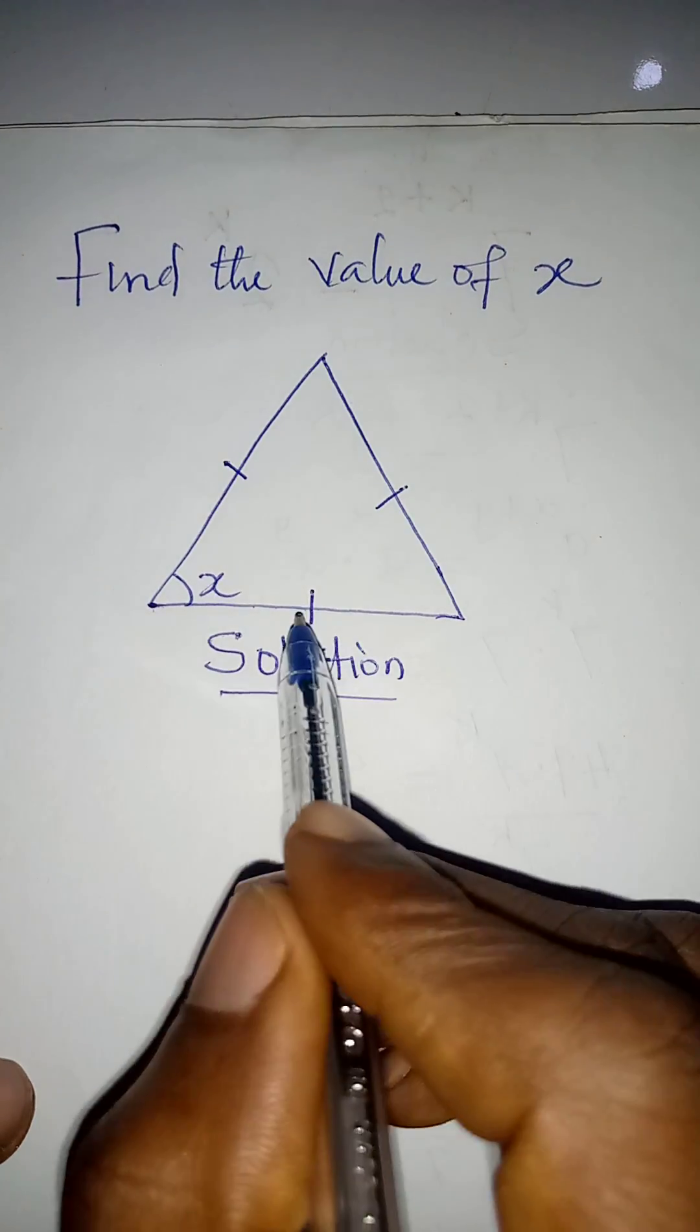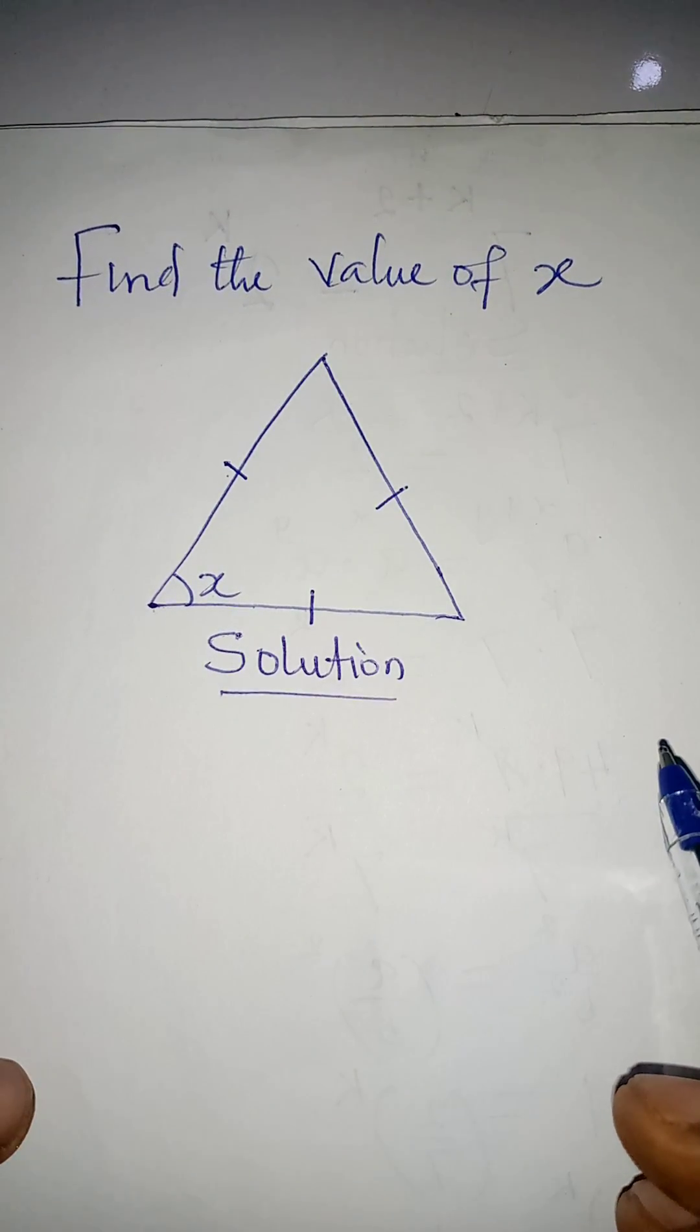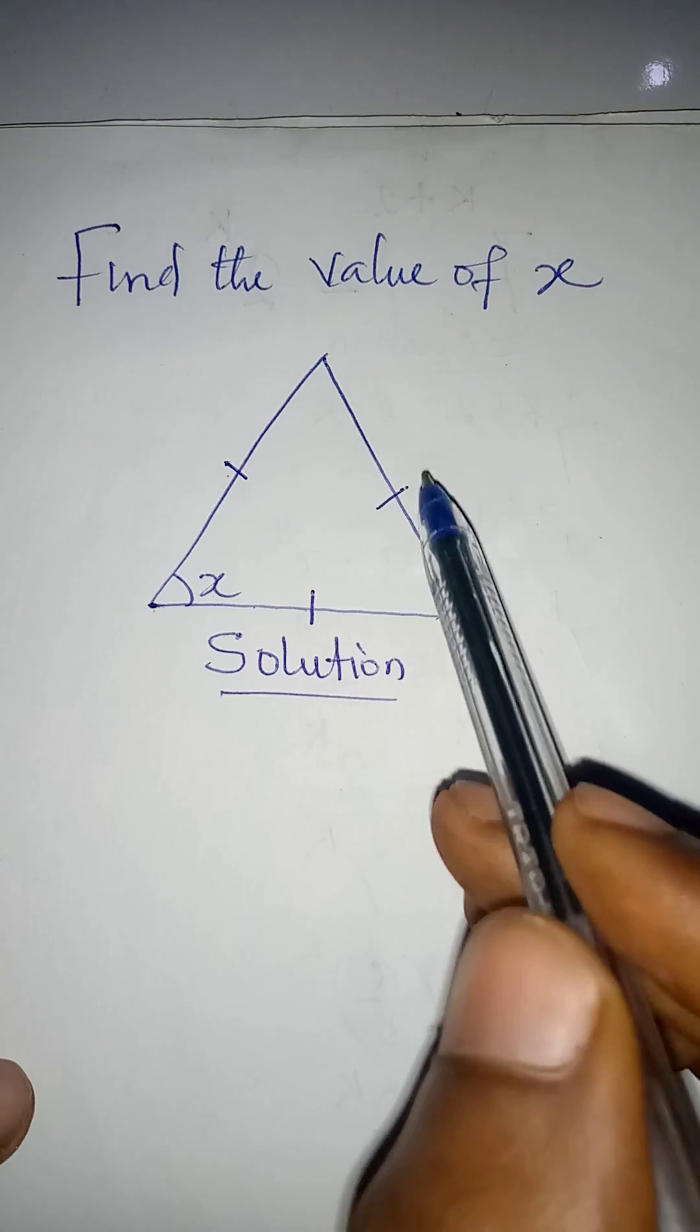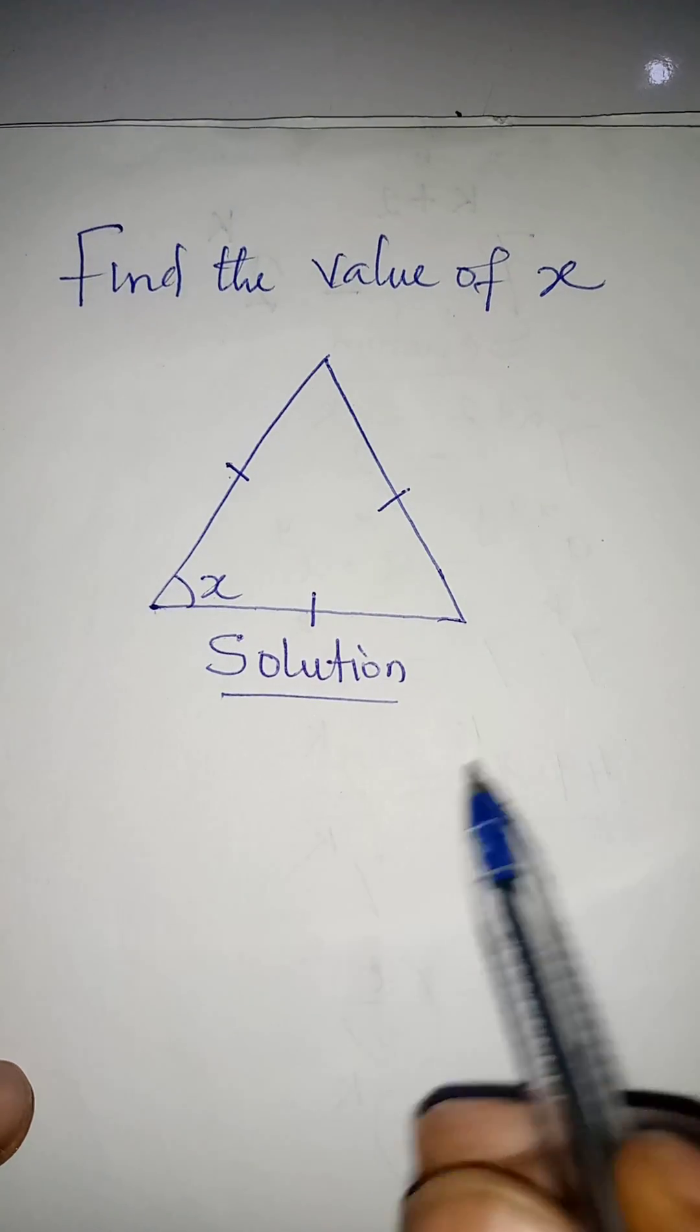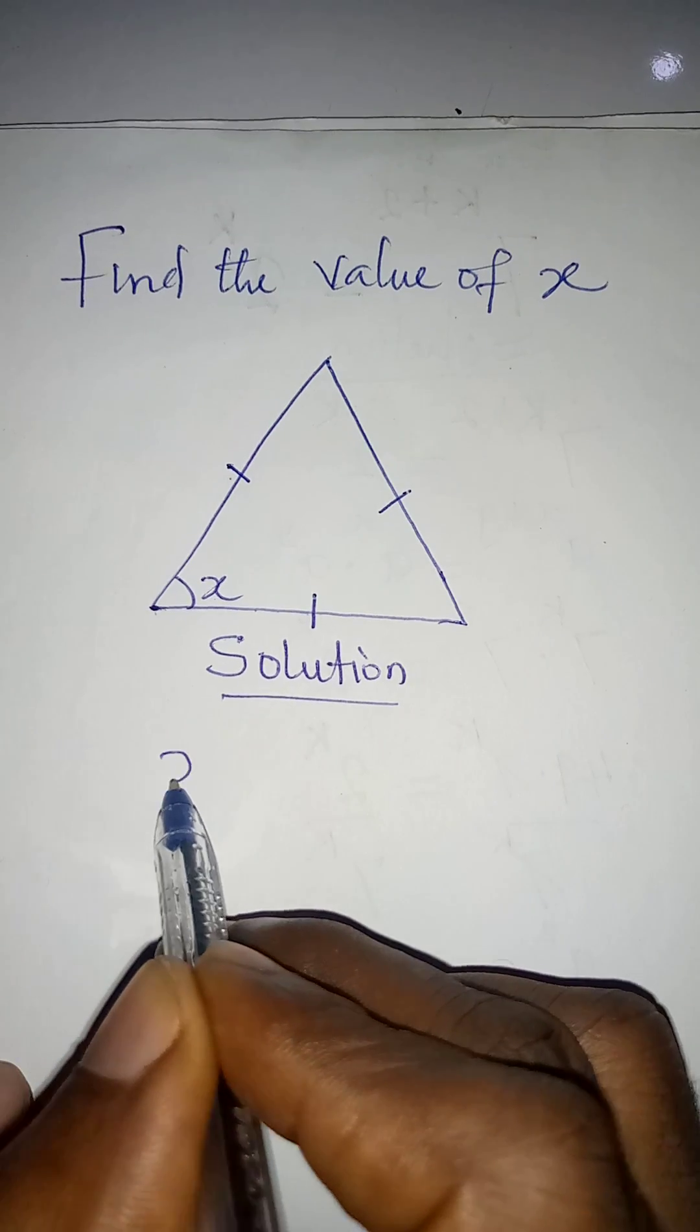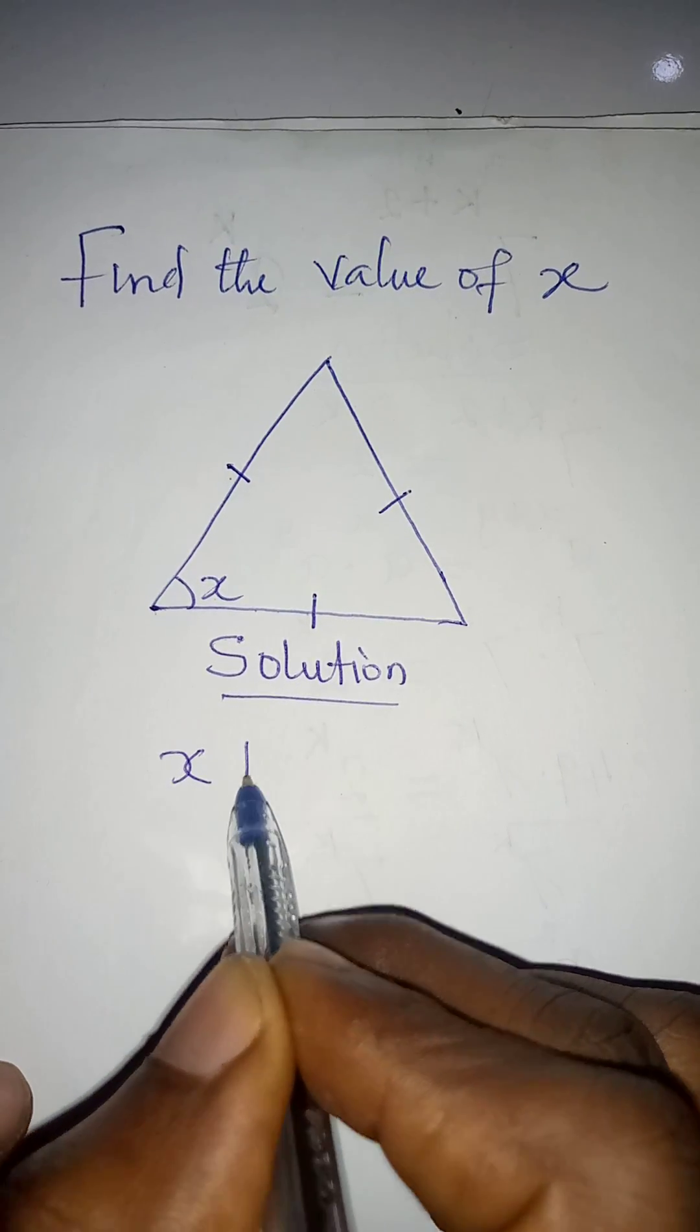But because of these signs, we can be able to know that it is an equilateral triangle, meaning that all the sides are equal and all the angles are equal. Therefore, all the angles will be x.